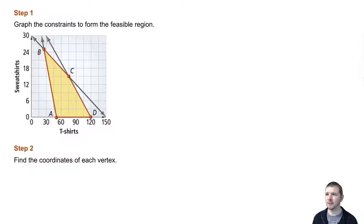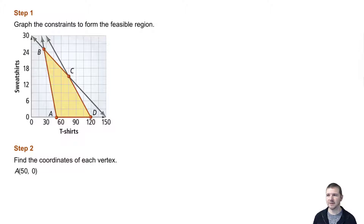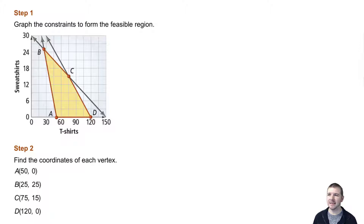Step 2: Find the coordinates of each vertex of the feasible region. Here, A is (50, 0), B is (25, 25), C is (75, 15), and D is (120, 0).